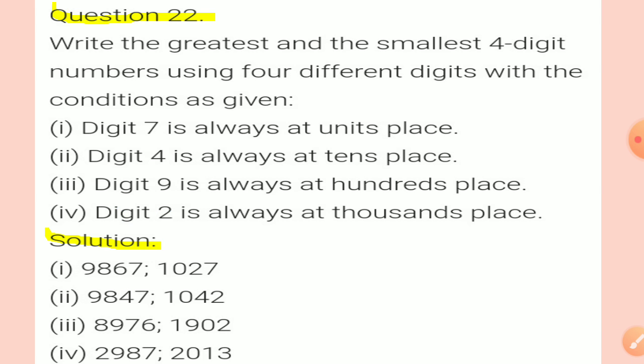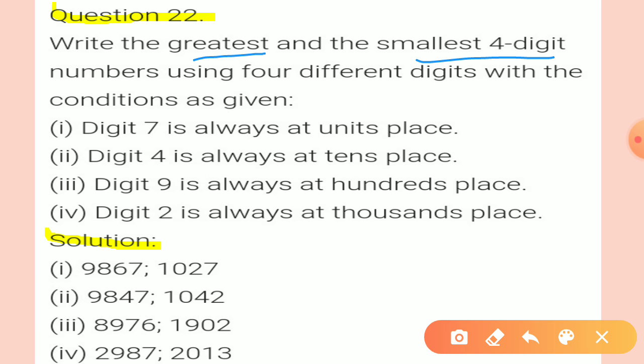Question 22, the last question of this exercise: Write the greatest and smallest 4-digit number using 4 different digits with the given conditions. Condition 1: digit 7 is always at the unit place. Fix 7 in the unit place. Then for the greatest number, use 9, 8, and since 7 is fixed at unit place, use 6 next — giving 9, 8, 6, 7.